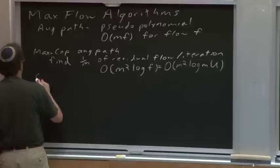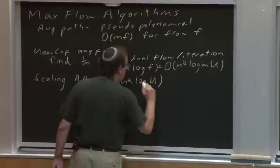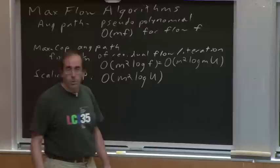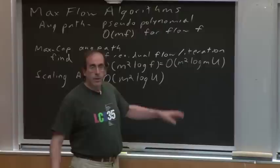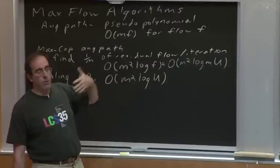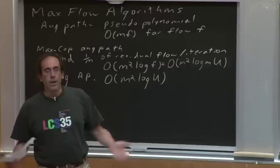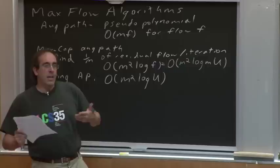We similarly saw a scaling augmenting path algorithm with a running time of order m squared log u — just a little bit better than the max capacity augmenting path algorithm — and it too is a polynomial time algorithm. But there's a quibble with these polynomial time bounds: there's this strange dependence on the ranges of the numbers. If you think about the problem more generally, max flow seems to be about additions and subtractions of numbers, so why should the exact values of the numbers actually matter?